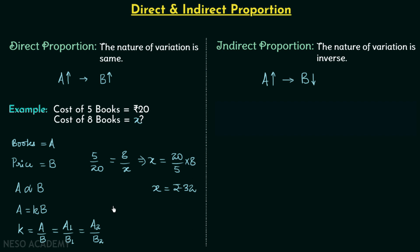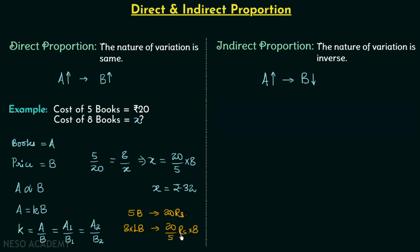The same answer can be obtained using the unitary method. 5 books cost 20 rupees, so 1 book costs 20 over 5 rupees. Therefore 8 books will cost 20 over 5 multiplied by 8, giving us 32 rupees.